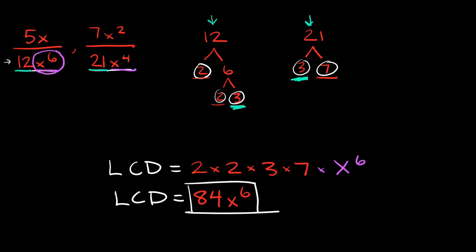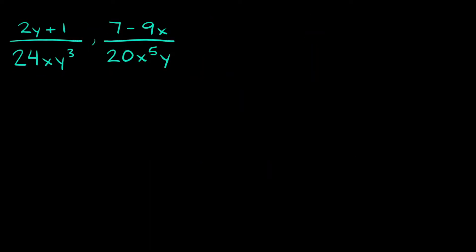Hopefully that wasn't too bad — we're going to try a couple more examples that are going to be a little bit harder. Here is our next example. If we want to find the LCD between both of these, again we're just focusing on the denominators. We'll start by finding the least common denominator between 24 and 20, by breaking each of them down into their factors using a factor tree.